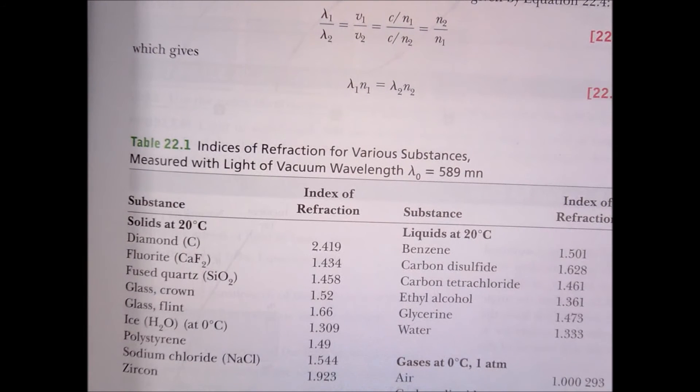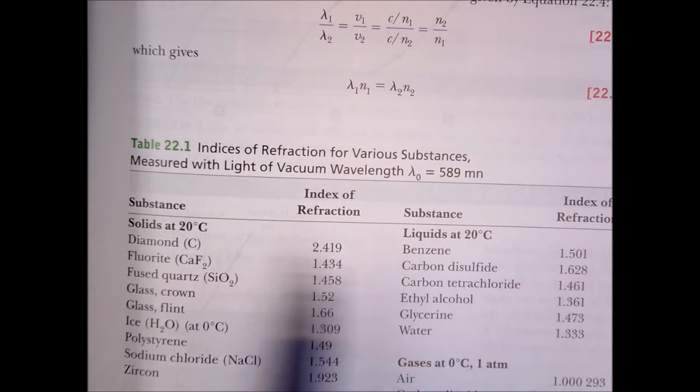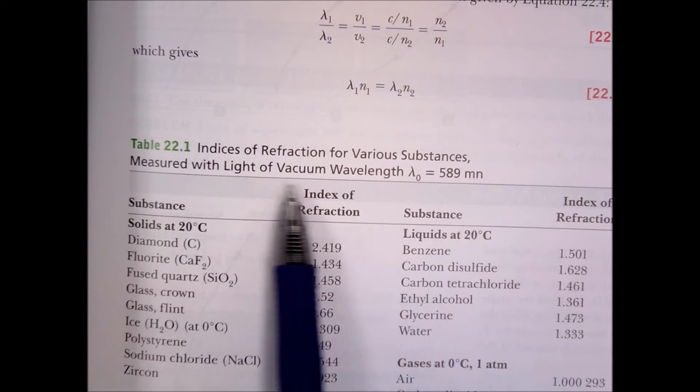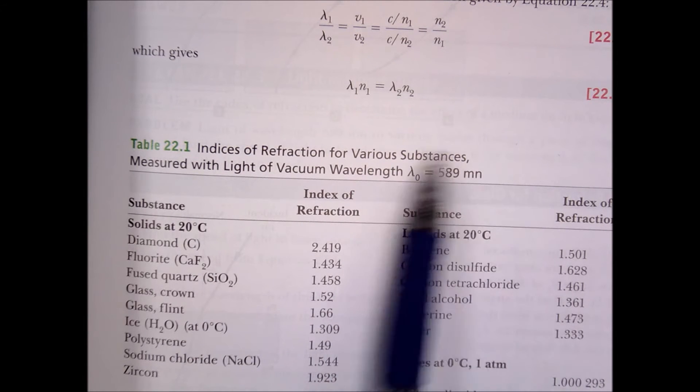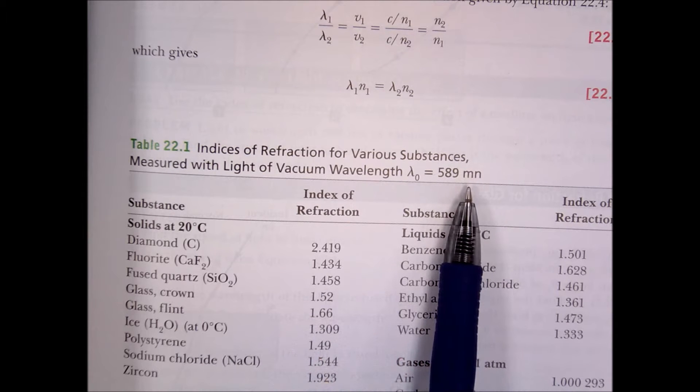So one of the things you probably glossed over in this little table when it was giving you all the indexes of refraction was it says measured with light of vacuum wavelength, 589 nanometers. Whoa, they made a mistake here, didn't they?